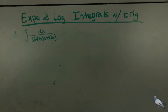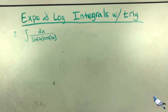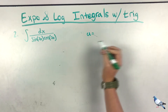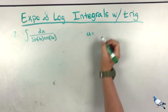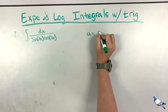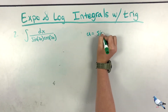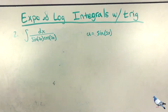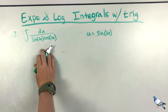For our second problem, we have the integral of dx over sine(3x) times cosine(3x). First, we're going to find u, which is going to be sine(3x), because I'm trying to get the entire denominator in terms of u so I can use a property to take the integral.